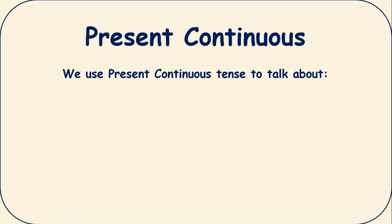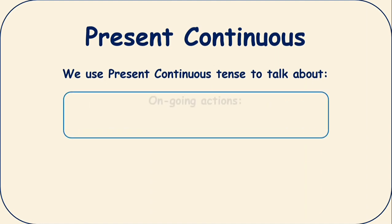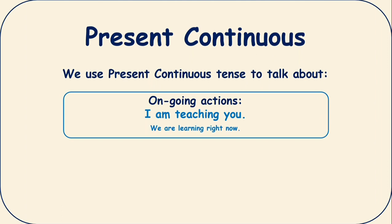We use present continuous tense to talk about ongoing actions. For example, I am teaching you, we are learning right now. These are the ongoing actions which are going on right now at the moment.